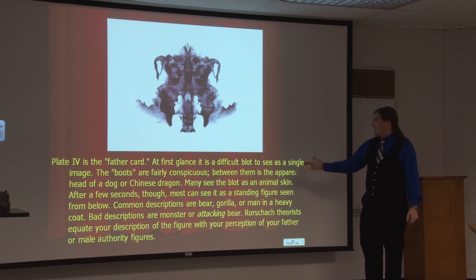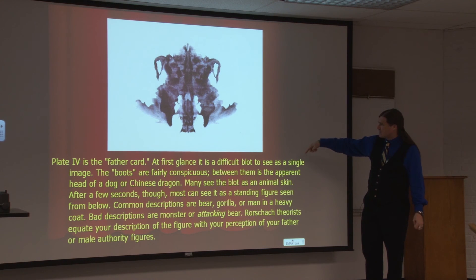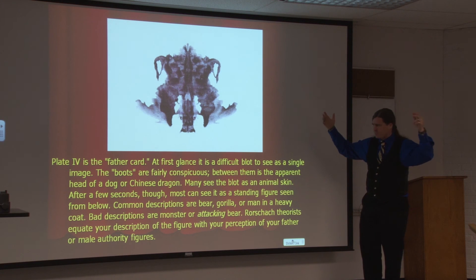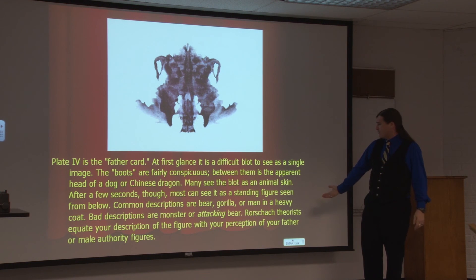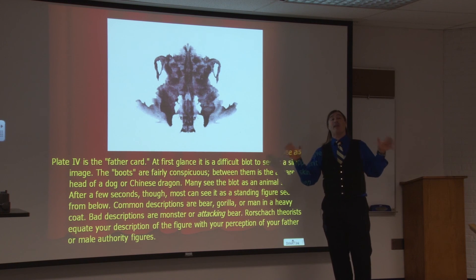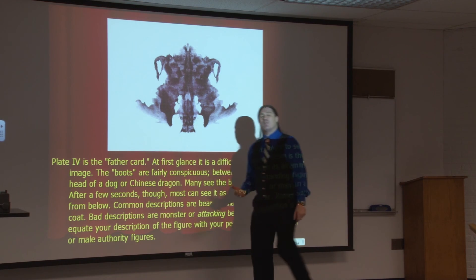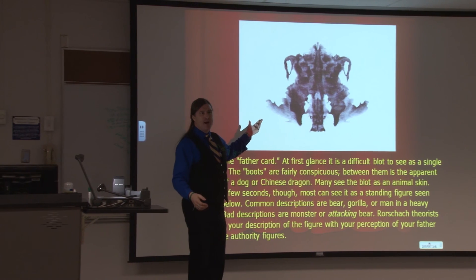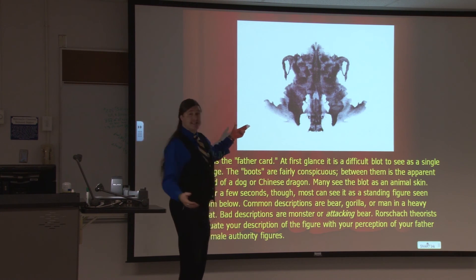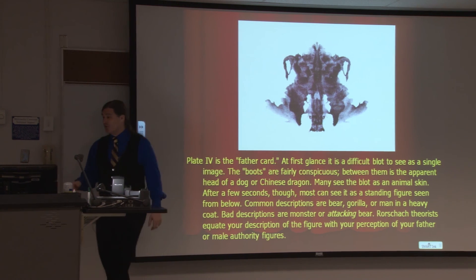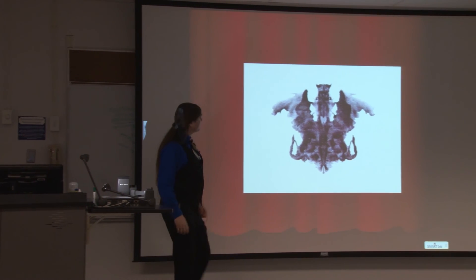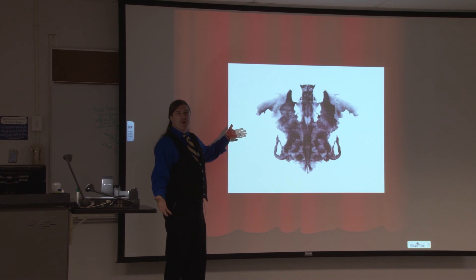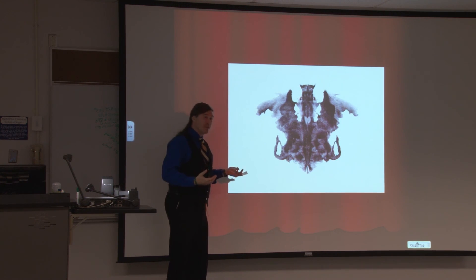They equate father with authority figure. The boots are fairly conspicuous; between them is the apparent head of a Chinese dragon or a dog. Many see it as an animal skin; after a few seconds most can see it as a standing figure seen from below. Common descriptions: bear, gorilla, man in a heavy coat. Quote-unquote bad descriptions would be monster or attacking bear. Rorschach theorists equate your description of the figure with your perception of your father or male authority figures. For me, that is one hell of a stretch — I don't know that you can make a leap of faith like that from an ambiguous inkblot to how you see or respond to your father. But from a Freudian point of view, that's where they're going. If you flip it over, I see three seahorses coming at you — which shows an inherent weakness of the projective test genre, but people who are into it are very into it and will defend it staunchly.